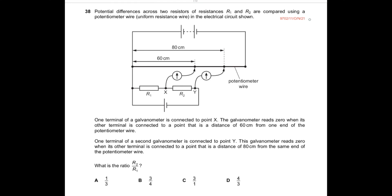Hello folks, today this is the 2021 October/November Paper 1 Question 38. As the diagram shows, it is about current electricity. It says that potential differences across two resistors of resistances R1 and R2 are compared using a potentiometer wire — a uniform resistance wire, which of course should have a uniform cross-section.